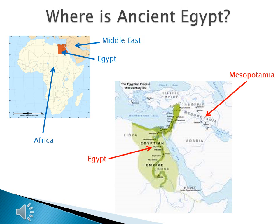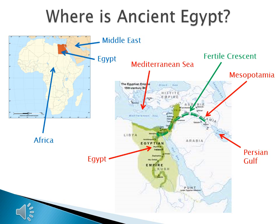The other two landmarks that we used were the Mediterranean Sea and the Persian Gulf. We even know that Mesopotamia and Egypt form the ends of the Fertile Crescent. Now, to make sure we know exactly where to find Egypt, we're going to add one new landmark: the Red Sea. The Red Sea separates Egypt and Africa from the Arabian Peninsula in Asia.